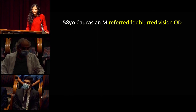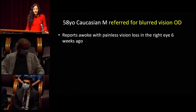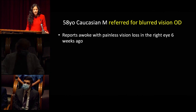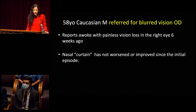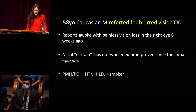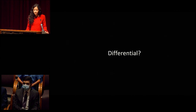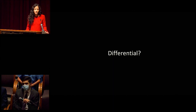Our patient is a 58-year-old Caucasian male who came in for blurred vision in his right eye. On further history, he reports waking with painless vision loss six weeks ago and noting a nasal curtain that has not worsened or improved. His past medical history is significant for hypertension, hyperlipidemia, and he is a smoker. Dr. Shalai, given our imaging findings, what is running through your head for the differential?